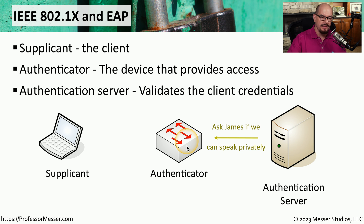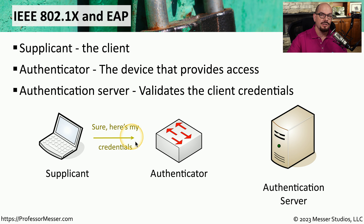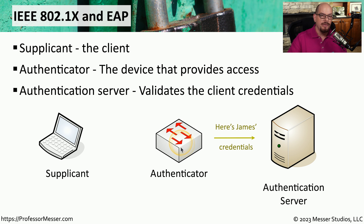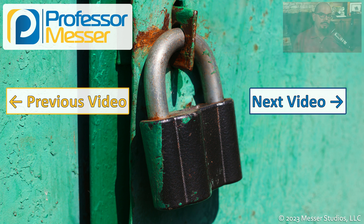If the authentication server is accepting logins, it sends a request back to the authenticator asking for additional details that can be used for authentication. The authenticator sends that request for additional details to the supplicant, and then the supplicant provides the required credentials. The final step is to confirm those login credentials are correct. The authenticator sends the credentials to the authentication server, and if the username, password, and other credentials match, the authentication server replies with a successful login and tells the authenticator to allow that user access to the network.